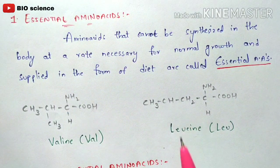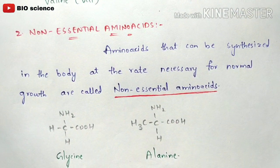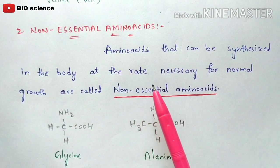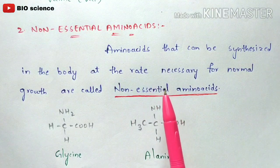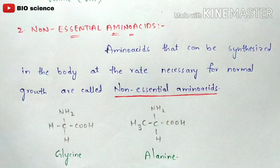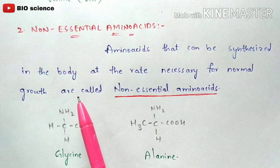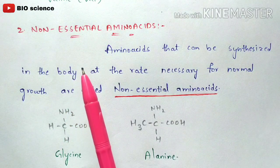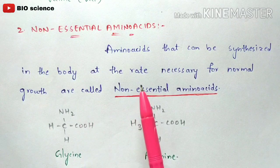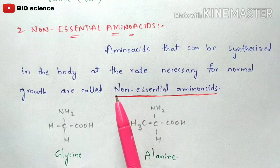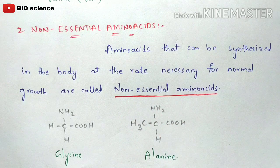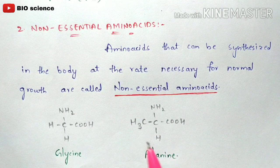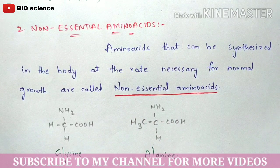Coming to non-essential amino acids, these are amino acids that can be synthesized in the body at the rate necessary for normal growth — quite opposite to essential amino acids. There is no need for external supply through diet, because our body itself can synthesize these amino acids. Examples include glycine and alanine. These are the structures of glycine and alanine. So this is the classification of amino acids based on their nature as well as their function.